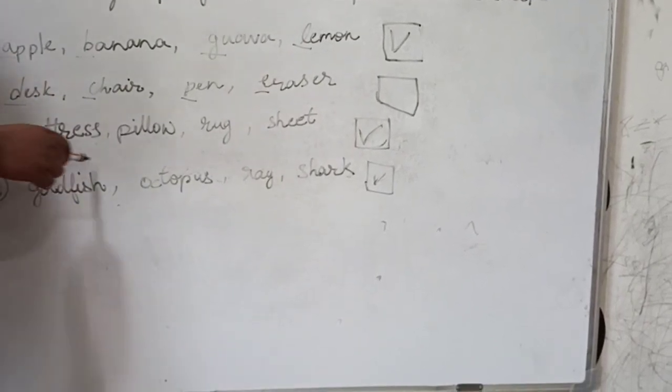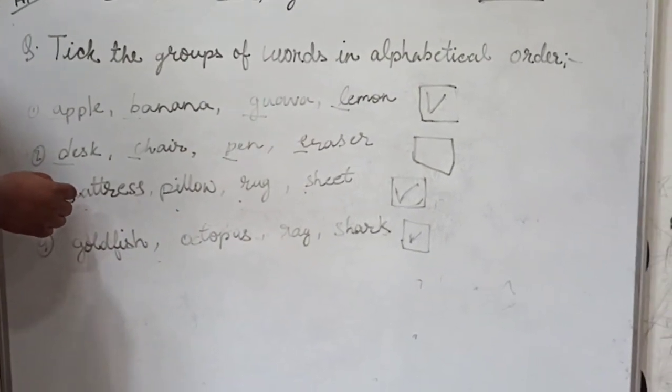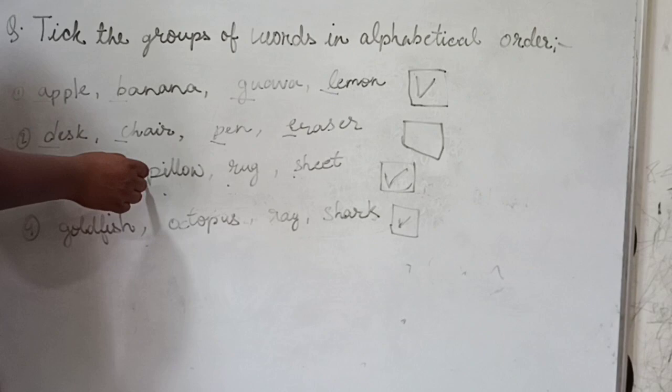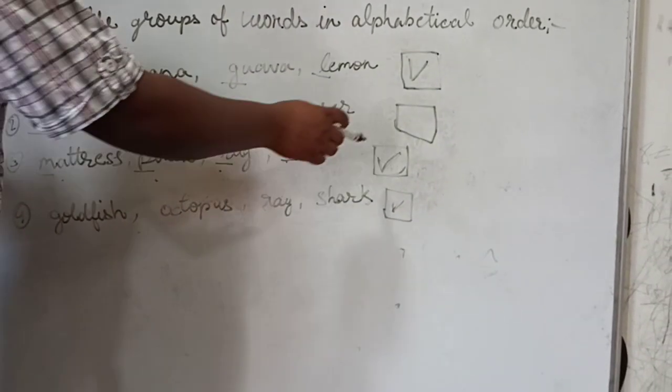Number 3: Mattress, Pillow, Rug, Sheet. Are these words in alphabetical order? Yes. See M, after that P, R, S. So it is in alphabetical order. We will tick.